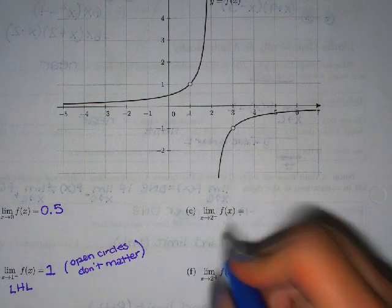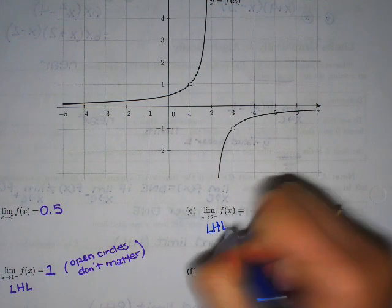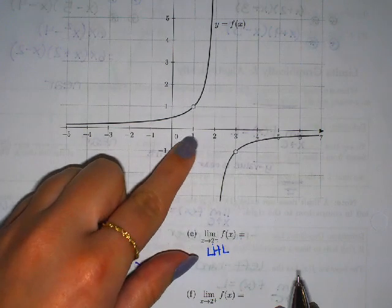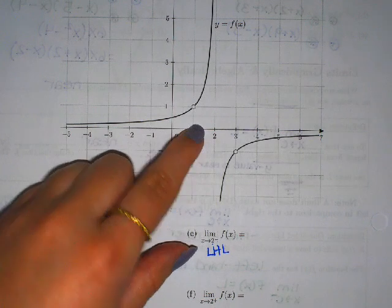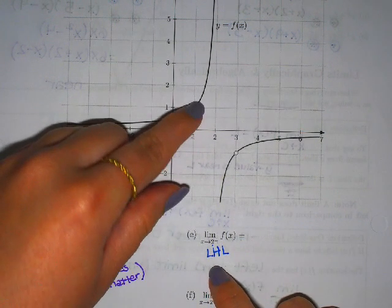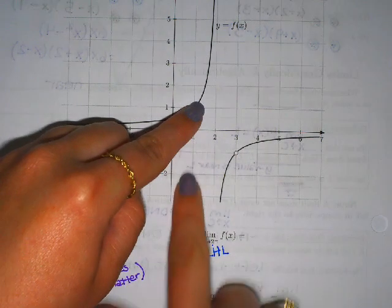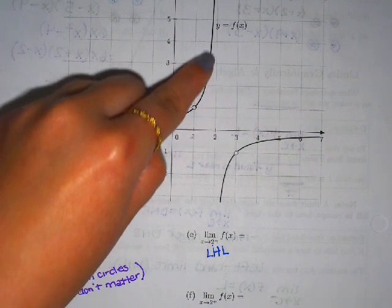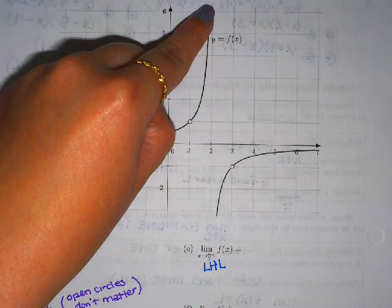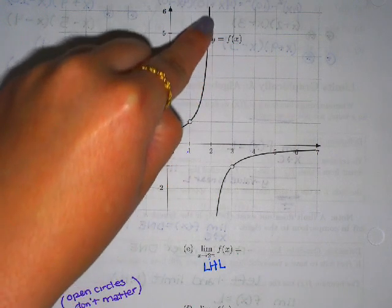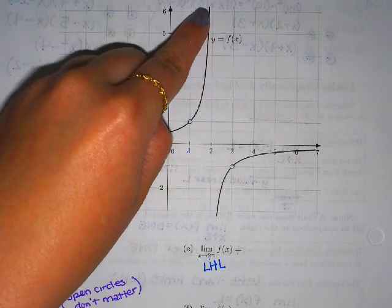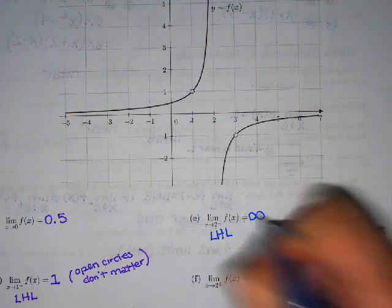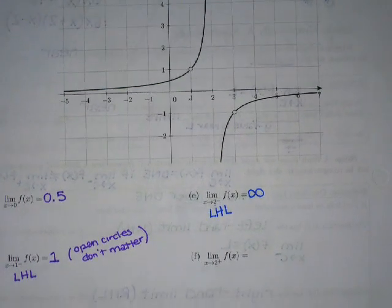We have the limit as x approaches 2 from the negative — negative means left-hand limit. So positive 2 but from the negative side. Here's 2. From the left side, I could start at 1 or maybe 1.5. On the left side of 2, I hop onto the graph above because there's no graph below on the left. As we approach the x-value 2, the y-value seems to go up forever — it doesn't look like it stops right above 2, it looks like it's going to keep going. So that left-hand limit is going up to positive infinity.